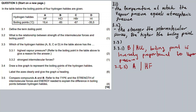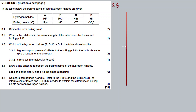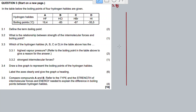Now let's move to 3.4: draw a line graph to represent the boiling points of the hydrogen halides. Label the axes clearly and give the graph a heading. Let me erase and set this up — question 3.4.